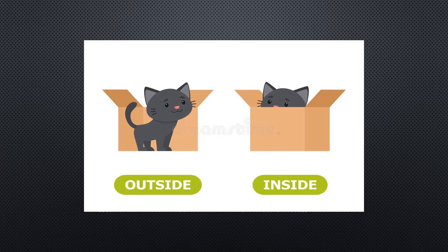Can you see these two pictures? What do they show? Do you remember anything from the last chapter? The first chapter was about opposite words — we had studied two stories. This time also we are going to study two stories which represent antonyms. They have given two opposite words: outside and inside. In the first picture the cat is outside the box, and in the second picture the cat is inside the box.